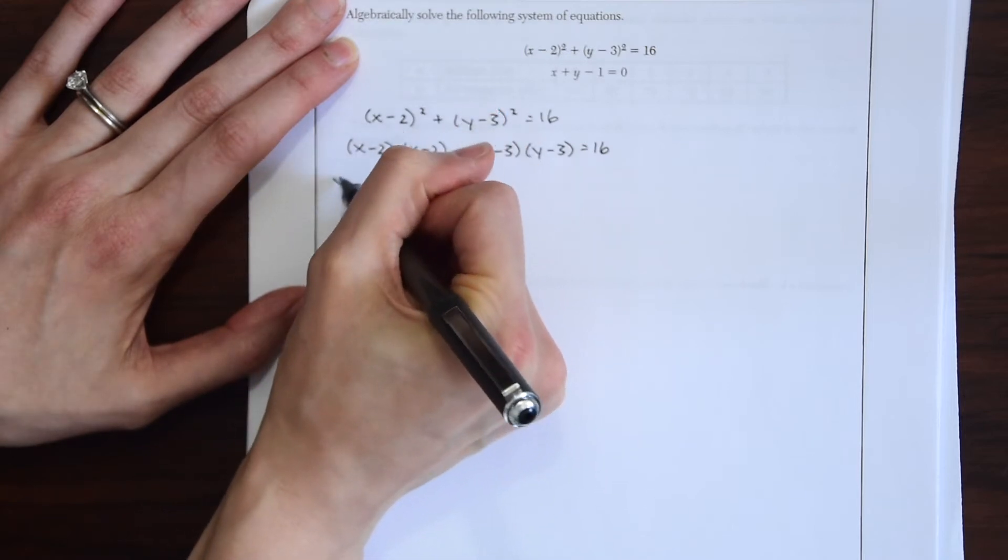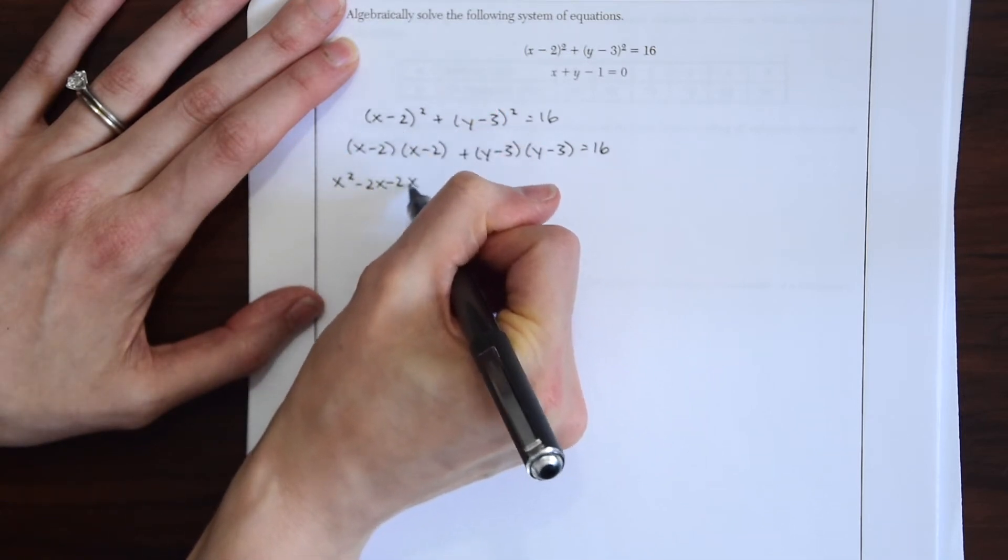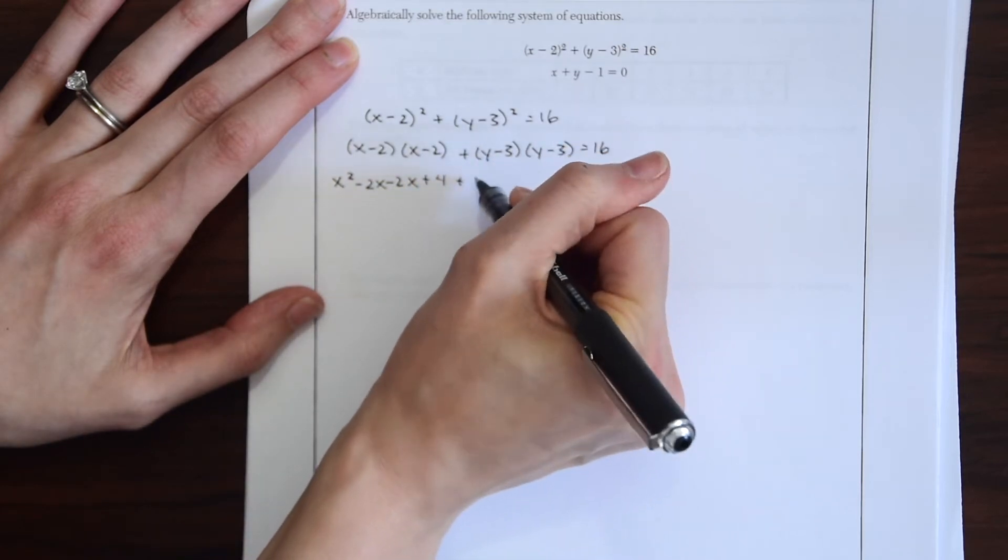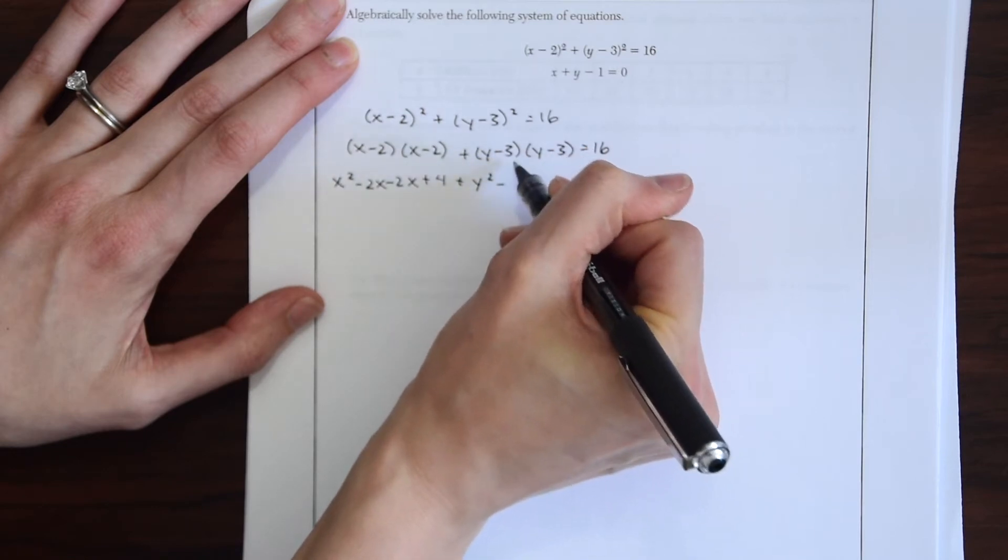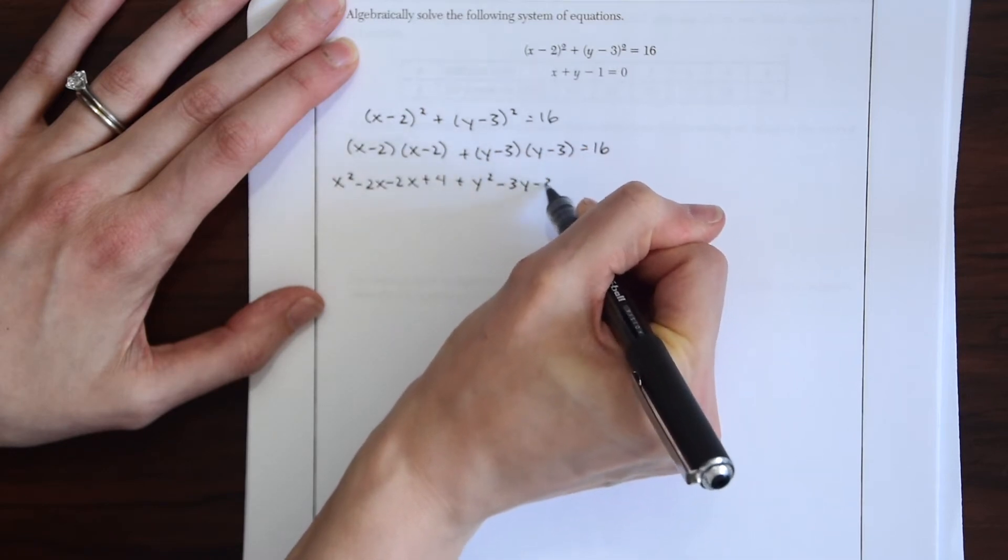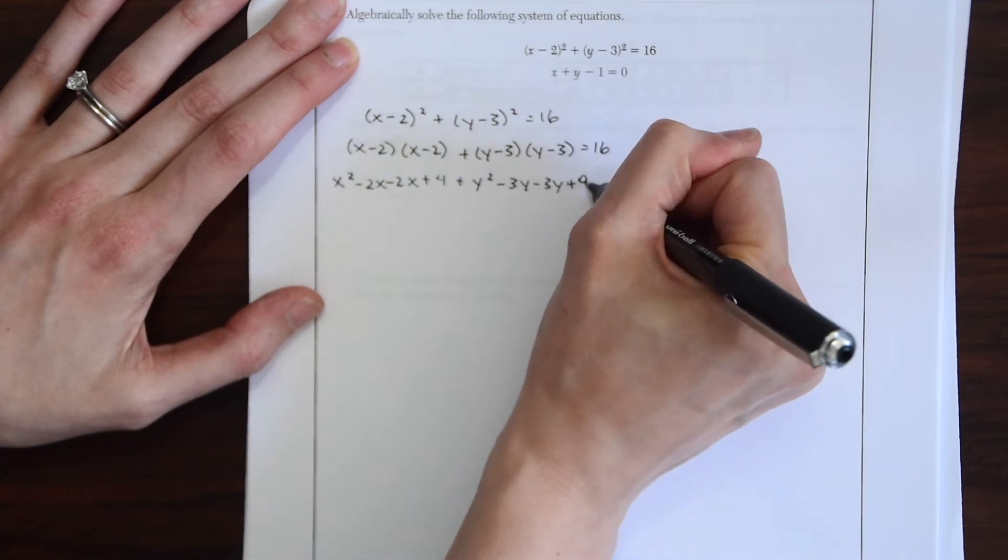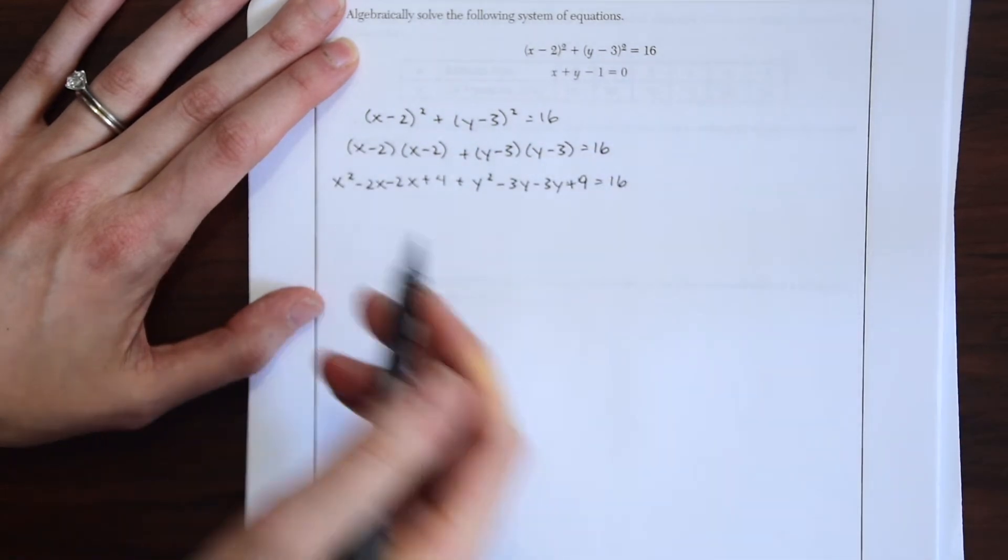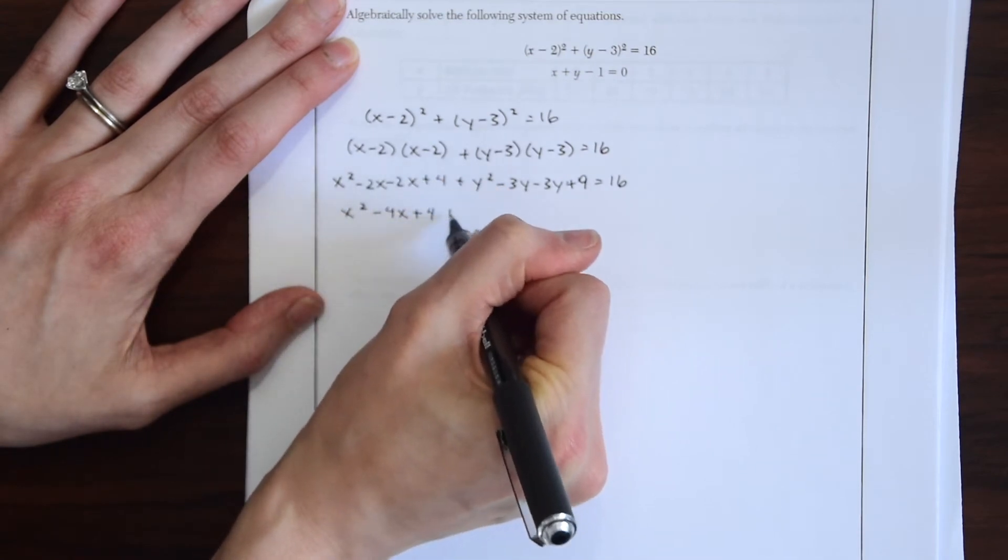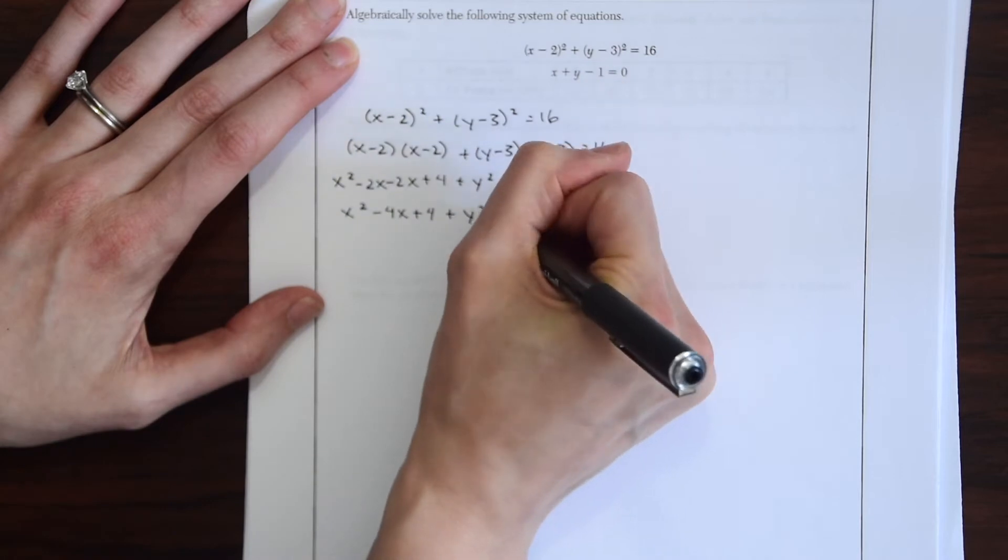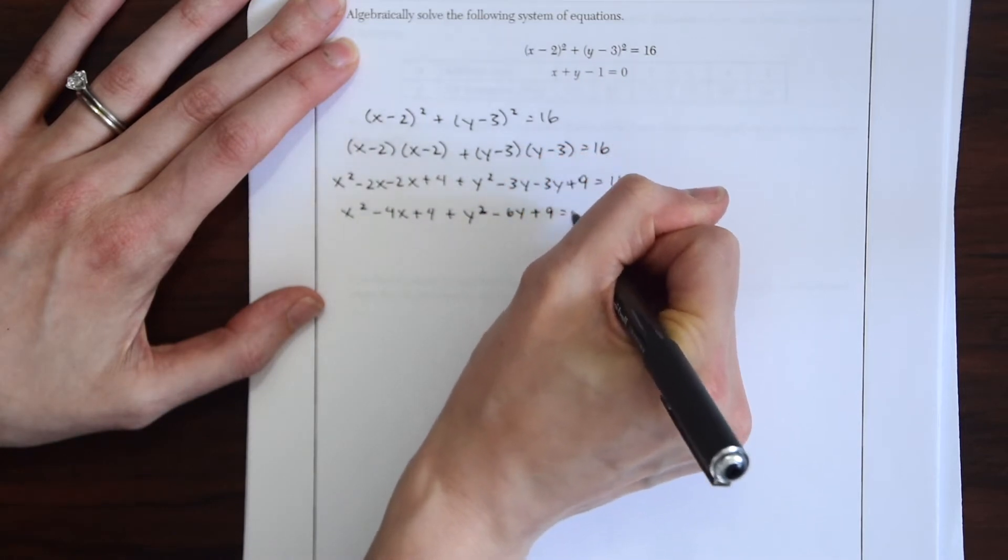We have x times x gives us x squared minus 2x minus 2x plus 4 plus now we're over here. We have y times y which is y squared minus 3y minus 3y and then negative 3 will give us plus 9 equals 16. So we can combine some like terms. So let's do that.